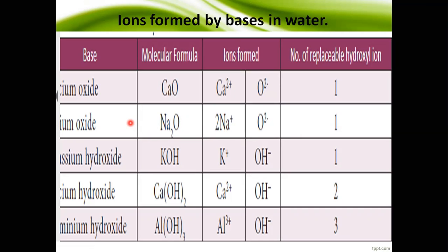Examples of bases include: calcium oxide, sodium oxide, and potassium oxide — these give only one replaceable hydroxyl ion. Calcium hydroxide gives 2 replaceable hydroxyl ions. Aluminum hydroxide gives 3 replaceable hydroxyl ions. Their molecular formulas are: CaO, Na₂O, KOH, Ca(OH)₂, and Al(OH)₃.